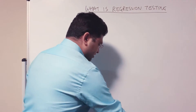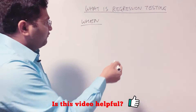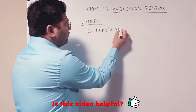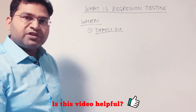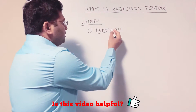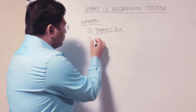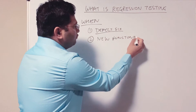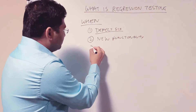Now let's understand what scenarios could trigger regression testing. The first is when a defect fix happens — there could be a code fix or configuration changes that fix the defect. In the case of a defect fix, regression testing is needed. The second scenario is when new functionality or a new feature is being added into the application.